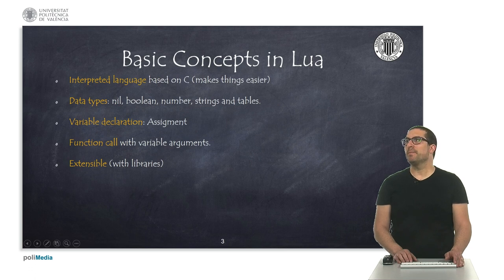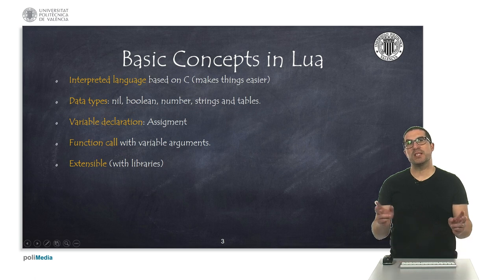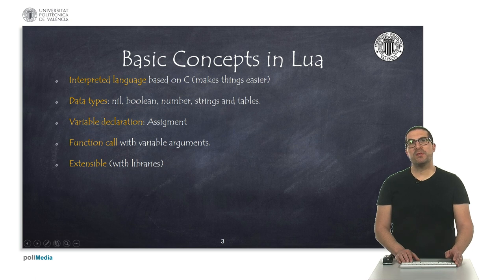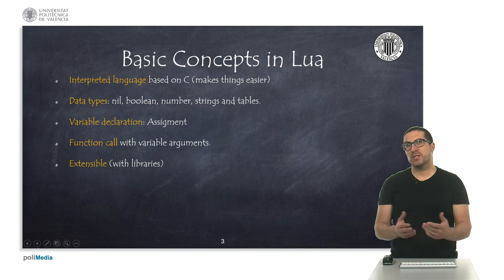So basically, Lua is an interpreted language which means it's a slow language. It's actually based on C, but it makes things easier, especially when handling memory and things like that. And it has different types of data, especially the nil value, which has no value indeed.